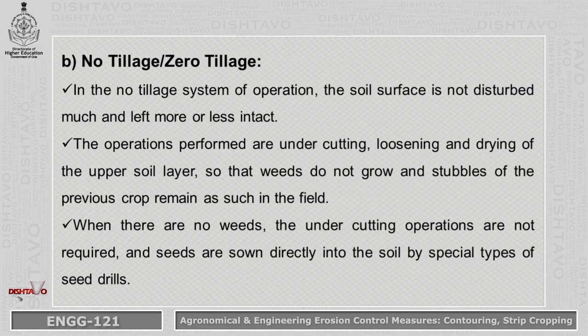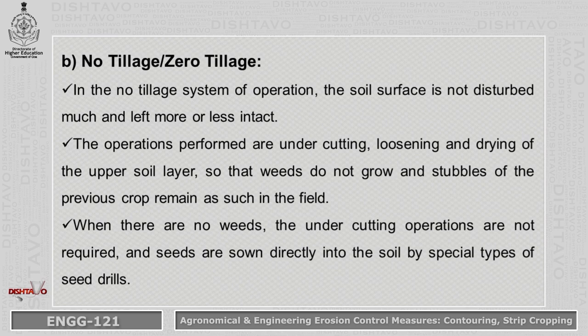Zero tillage means no intervention with the soil. After harvesting, the next crop is sown directly without disturbing the top layer of soil. Operations performed include undercutting, loosening, and drying of the upper soil layer so that weeds will not grow and stubbles of the previous crop remain in place, acting as organic fertilizer.